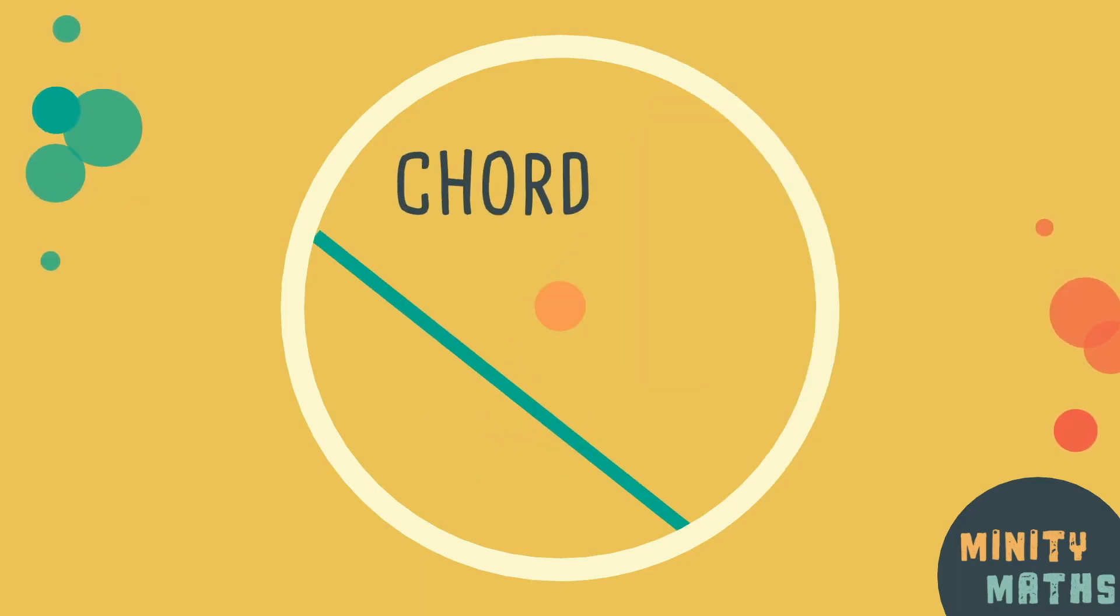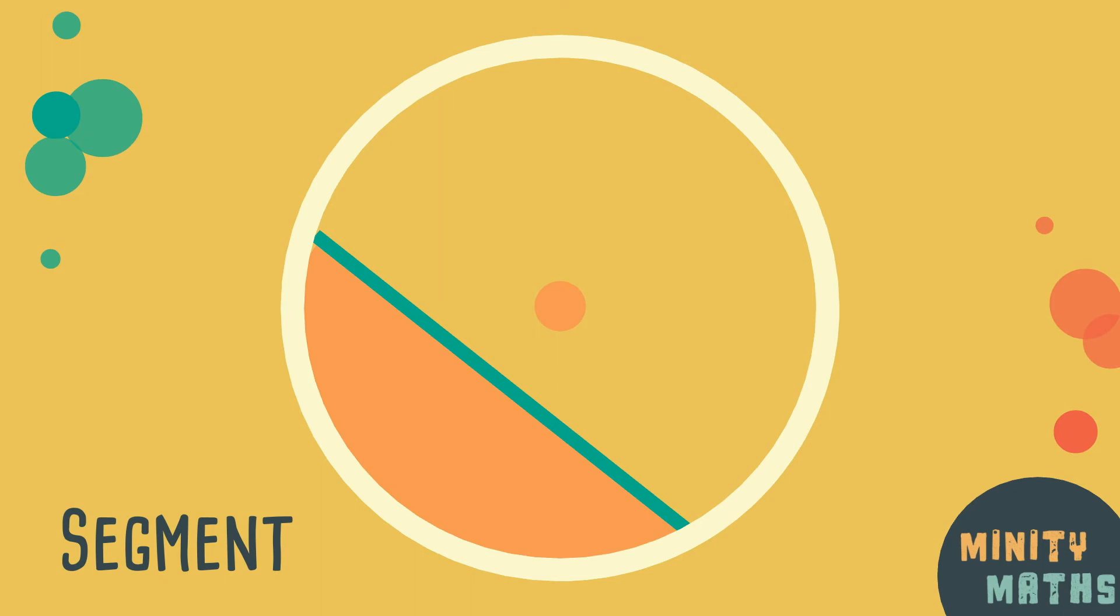A line that joins any two points on the circle but which doesn't always cross the centre of the circle is called a chord. And the area which is formed between the chord and the nearest edge is called a segment.